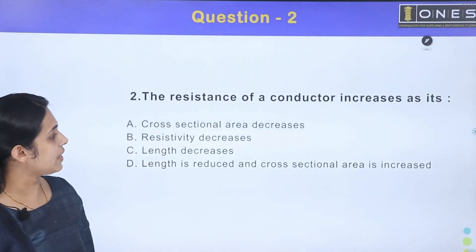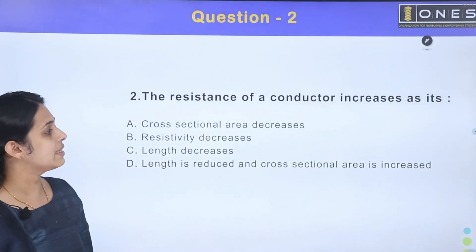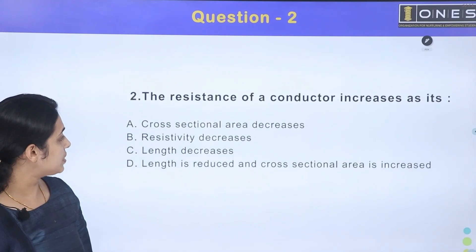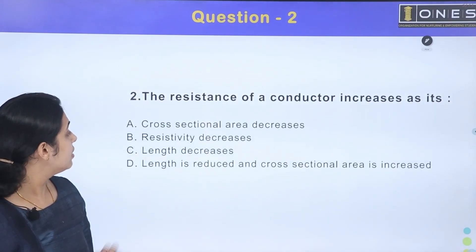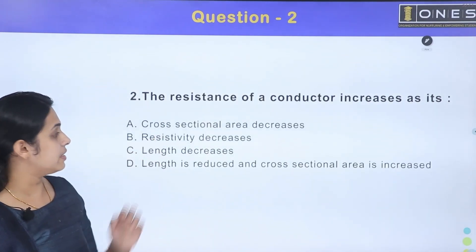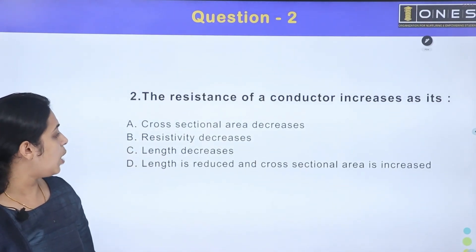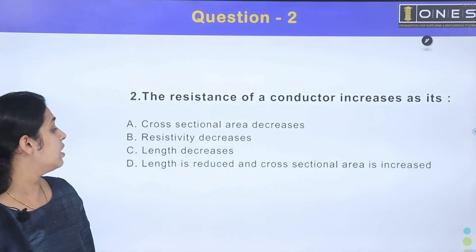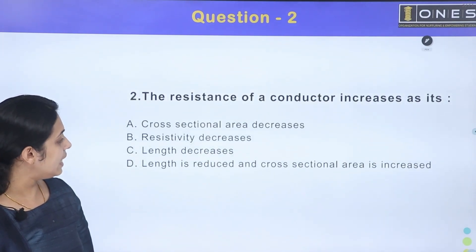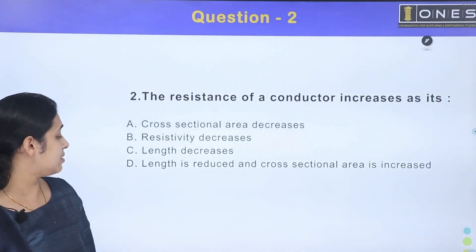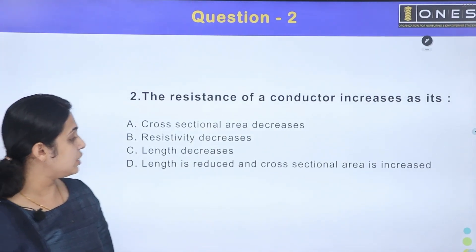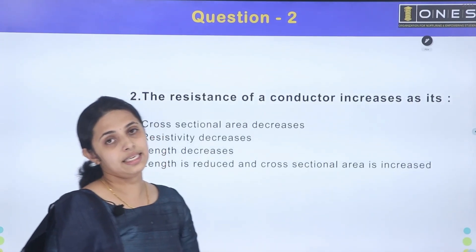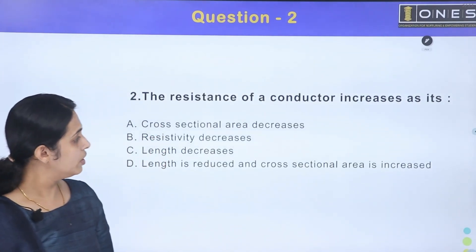Next question: The resistance of a conductor increases as — option A: cross-sectional area decreases, option B: resistivity decreases, option C: length decreases, option D: length is reduced and cross-sectional area is increased.